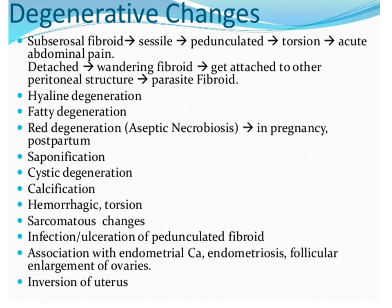Red degeneration is a typical complication of fibroids in pregnancy and in the postpartum period; it causes aseptic necrobiosis and the color is red, hence the name. Then there is cystic degeneration and calcification, which can be present in postmenopausal fibroids. Hemorrhage inside the fibroid can also occur. Sarcomatous change in a fibroid is very rare, present in less than one percent of cases.